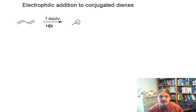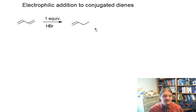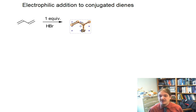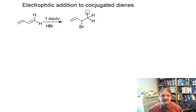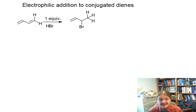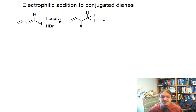So you might look at this molecule and expect that you're going to get as a major product, based on your understanding of the Markovnikov rule, that the bromine is going to end up here and you're going to have added a hydrogen. You're going to get this product, but this reaction also produces another product that perhaps you aren't expecting.